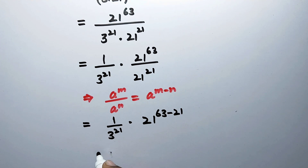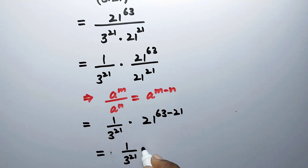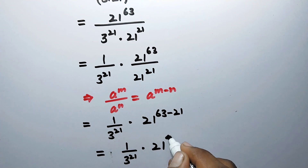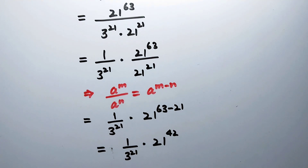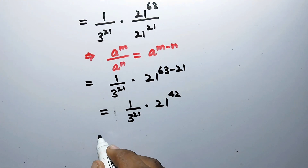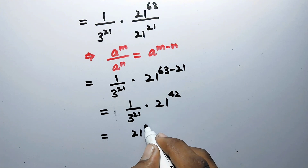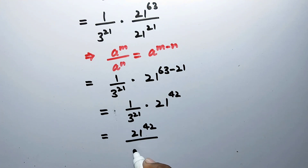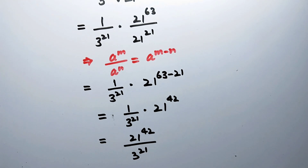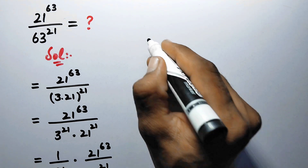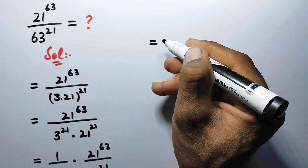So it will be equal to 1 over 3 to power 21 times 21 to power 42. Then we join with the fraction, giving us 21 to power 42 over 3 to power 21.